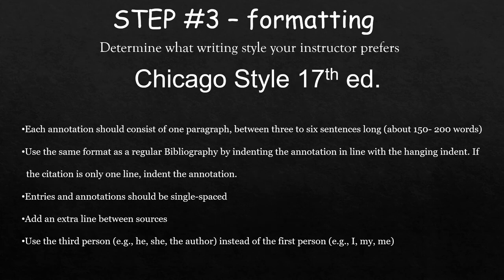The third most common writing style is Chicago style. If you're writing a paper for a history class, you're probably using Chicago style. Use the same format you'd use for a standard bibliography. Unlike APA and MLA, Chicago style bibliographies are single spaced with an extra line between entries. As always, avoid first person.